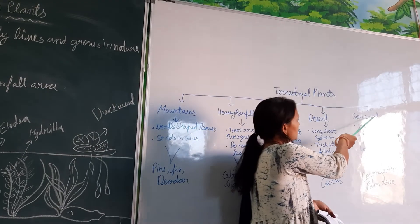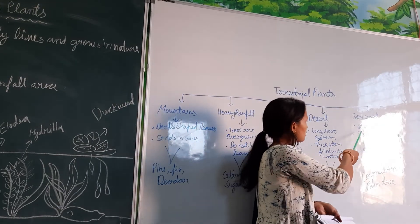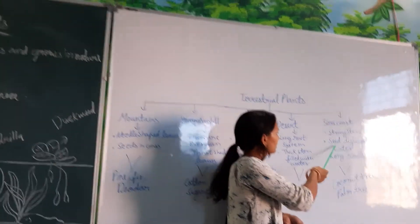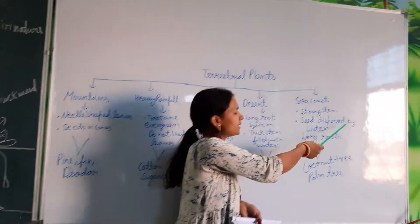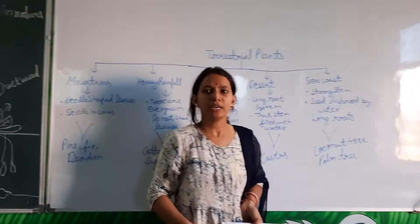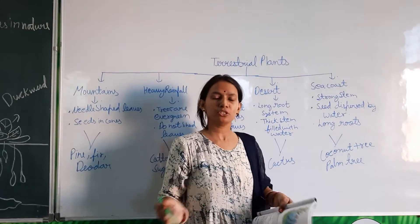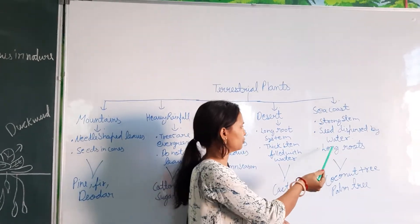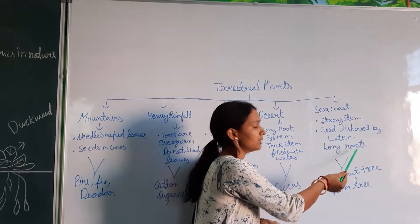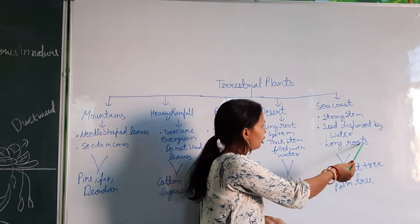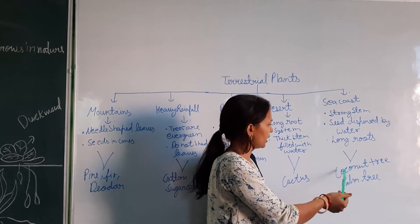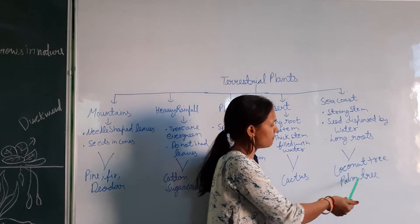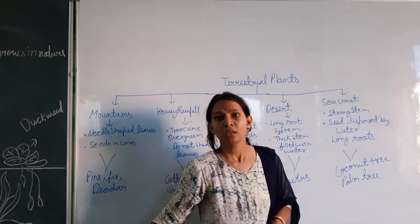Plants on the sea coast have a strong stem. Their seeds are dispersed by water — the seeds float in water to disperse. They also have long roots. Examples are coconut tree and palm tree.